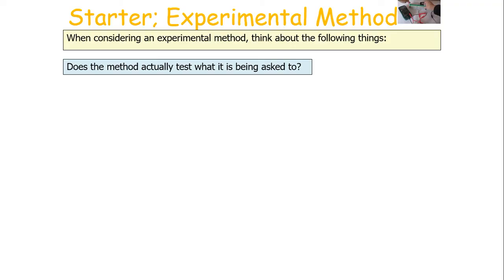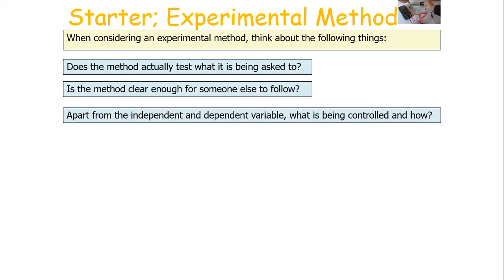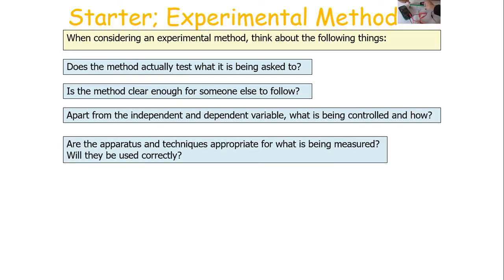When considering an experimental method and you've written your answer, think about the following things before you finish your response. Number one: does the method actually test what is being asked? Is the method clear enough for someone else to follow? Apart from the independent and dependent variable, what is being controlled and how? Are the apparatus and techniques used appropriate for what is being measured? For example, if you're measuring length, is the metre ruler appropriate, or is the screw gauge micrometer more appropriate?